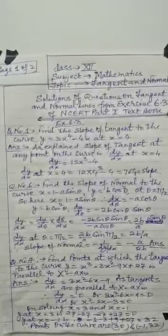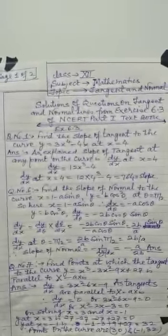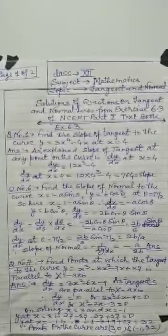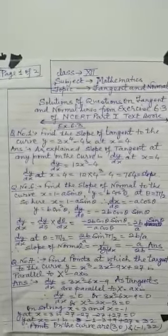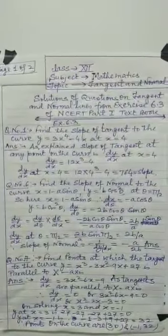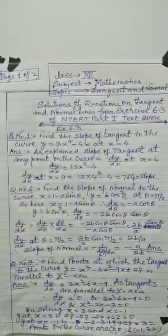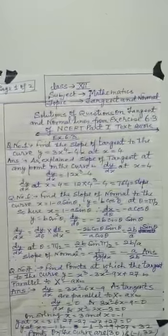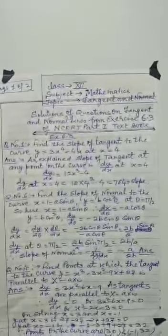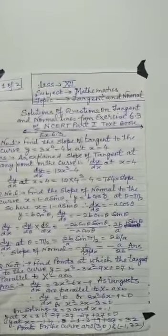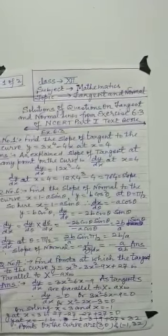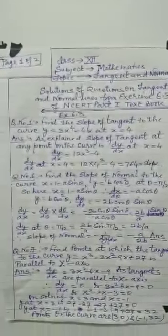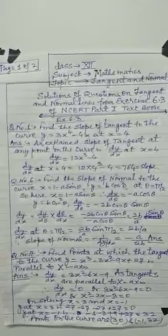Question number 7: find points at which the tangent to the curve y = x³ − 3x² − 9x + 27 is parallel to the x-axis. Since the tangent is parallel to the x-axis, dy/dx = 0. Differentiating gives 3x² − 6x − 9 = 0, so x = 3 and x = −1. Putting x = 3 in the curve gives y = 0, and x = −1 gives y = 32. So the points are (3, 0) and (−1, 32).